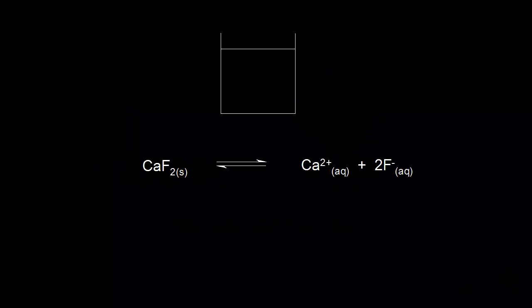Let's say we have a saturated solution of calcium fluoride in equilibrium with solid calcium fluoride. So in our beaker, here's some solid calcium fluoride, which is a slightly soluble ionic compound. And in solution, we have a saturated solution consisting of calcium two plus and fluoride anions.